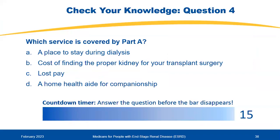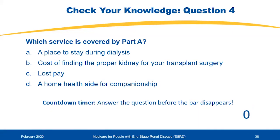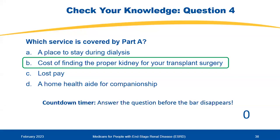Knowledge check: Which service is covered by Part A? Is it A, a place to stay during dialysis treatments; B, the cost of finding the proper kidney for your transplant surgery; C, lost pay; or D, home health aids for companionship? The correct answer is B — the cost of finding the proper kidney for your transplant surgery. Now we'll turn it back over to Peter to continue the presentation.